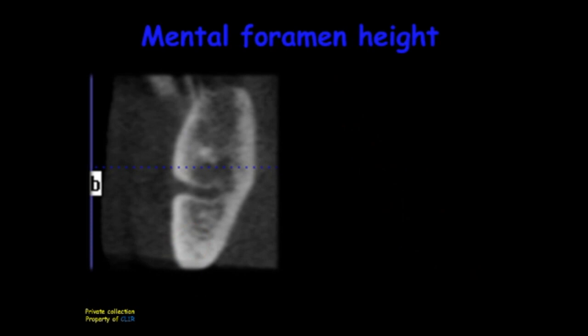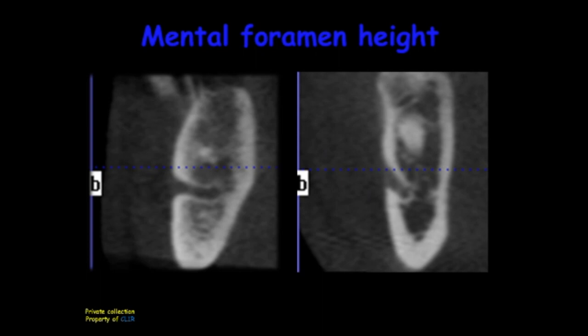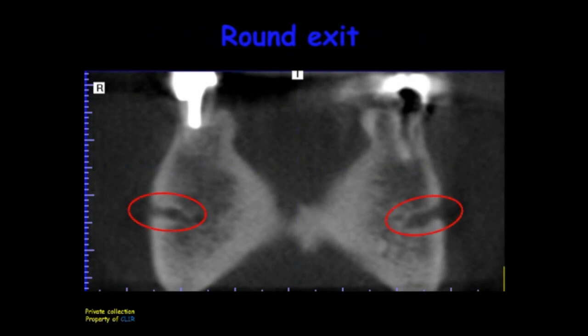At the cross-section level of the mental foramen, we can have two situations: either the inferior alveolar canal is at the same level as the mental foramen, or it is lower than the mental foramen. The exit will be round when the mental foramen and the inferior alveolar canal are on the same level, because the canal has to make only one loop in the buccal-lingual direction to exit the mandible. During surgery, when we uncover the mental foramen, we can estimate the bone height above the inferior alveolar canal, since they are at the same level.